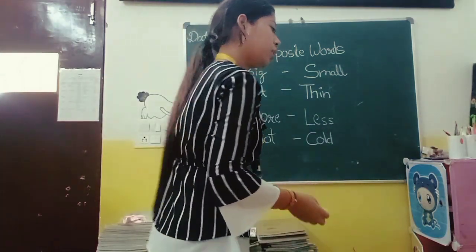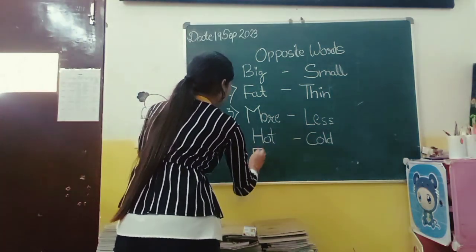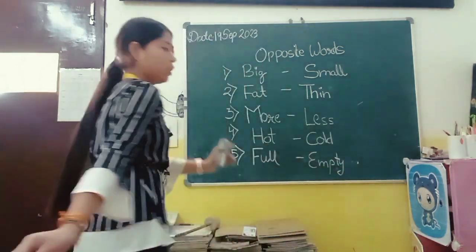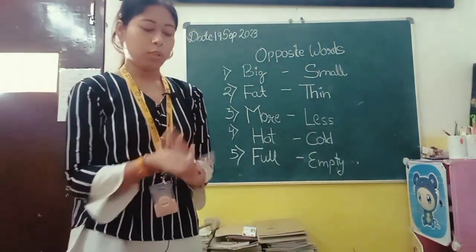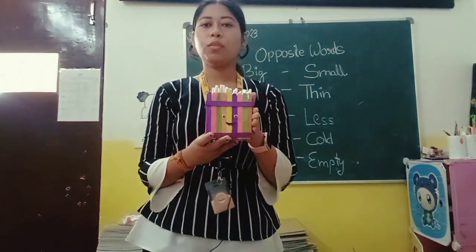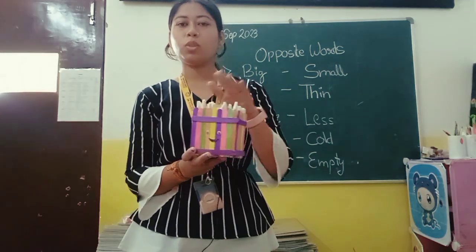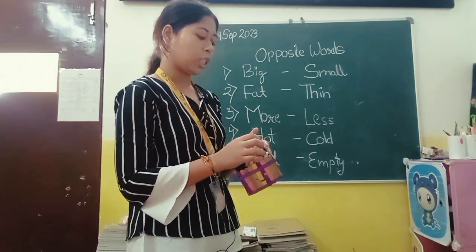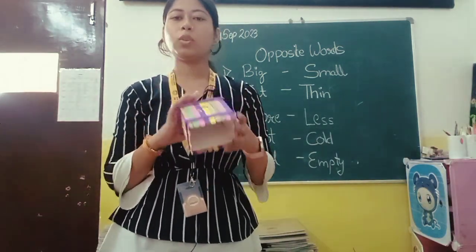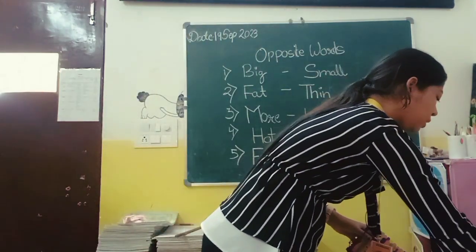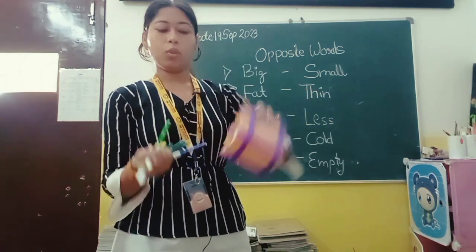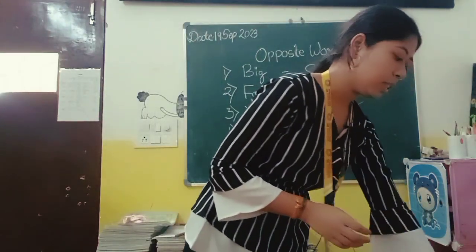Now let's move on to the next word — 'full' and the opposite word for full is 'empty'. What is the meaning of full and empty? Full means bhara hua and empty means khali. For example, this box is full with sketch pens — I have filled it with sketch pens. And if I remove all the sketch pens from this, now this box is empty. It has nothing in it, so it is empty. Full means bhara hua and empty means khali.